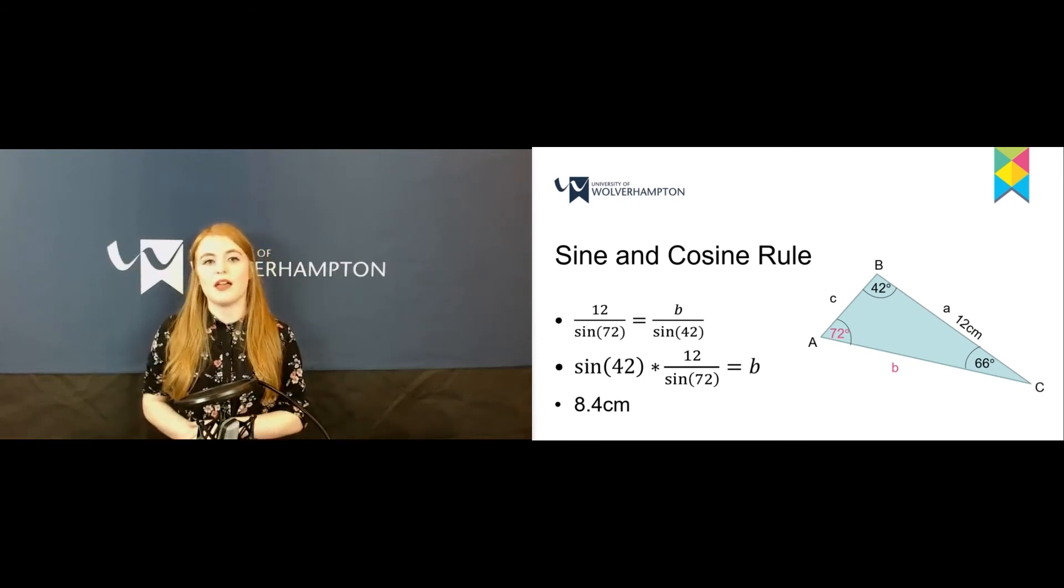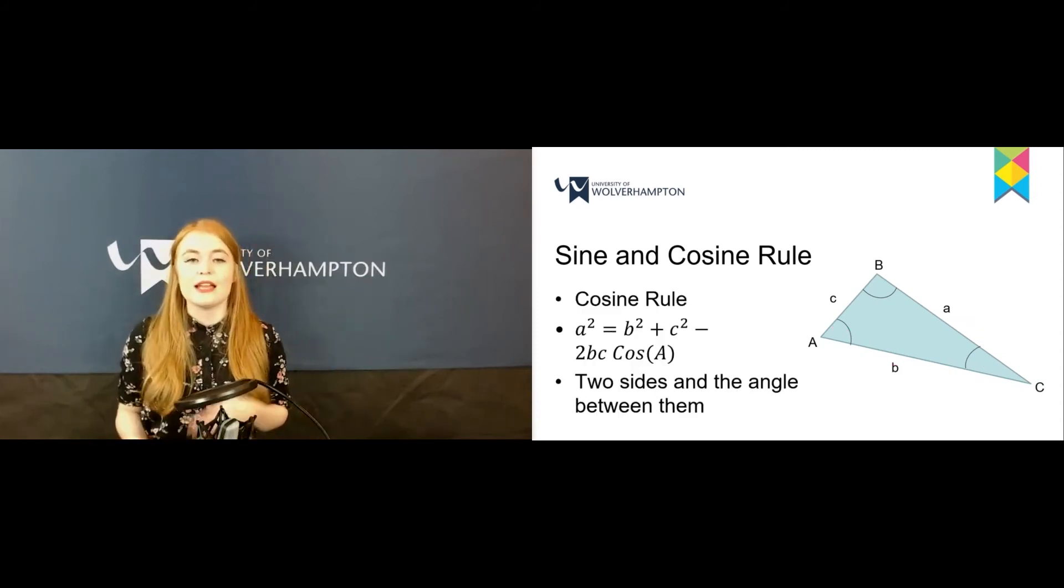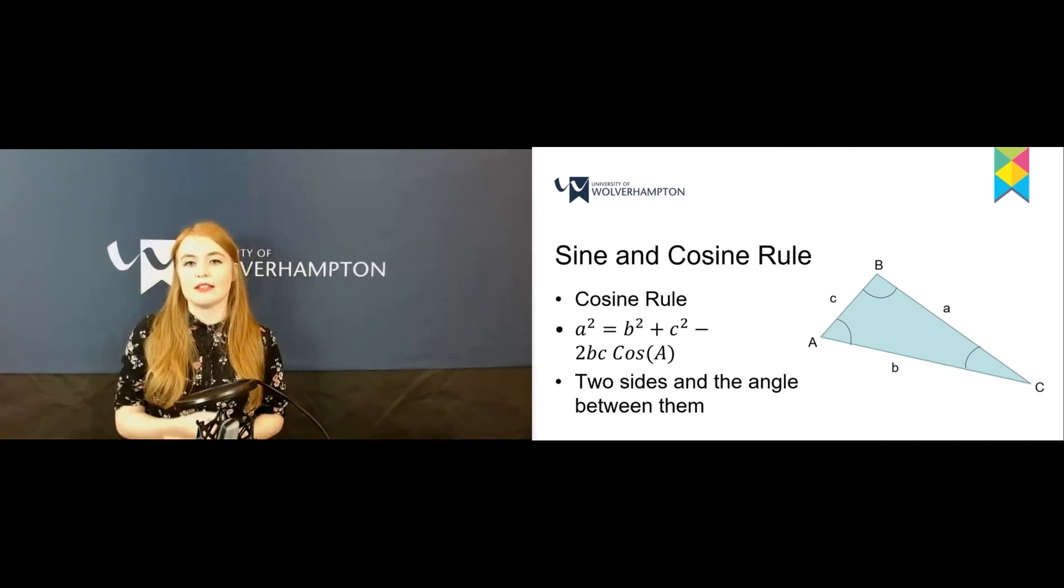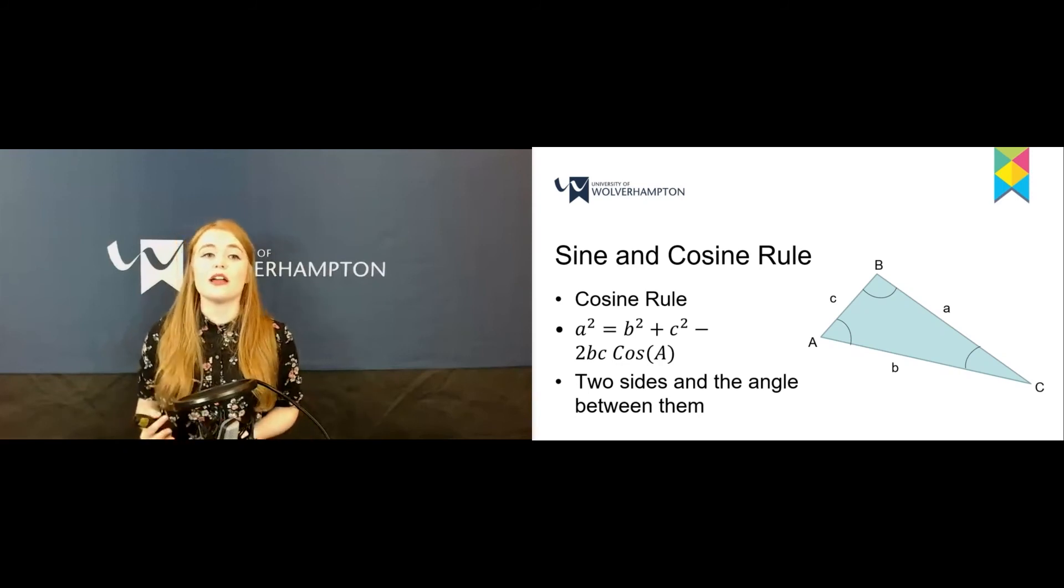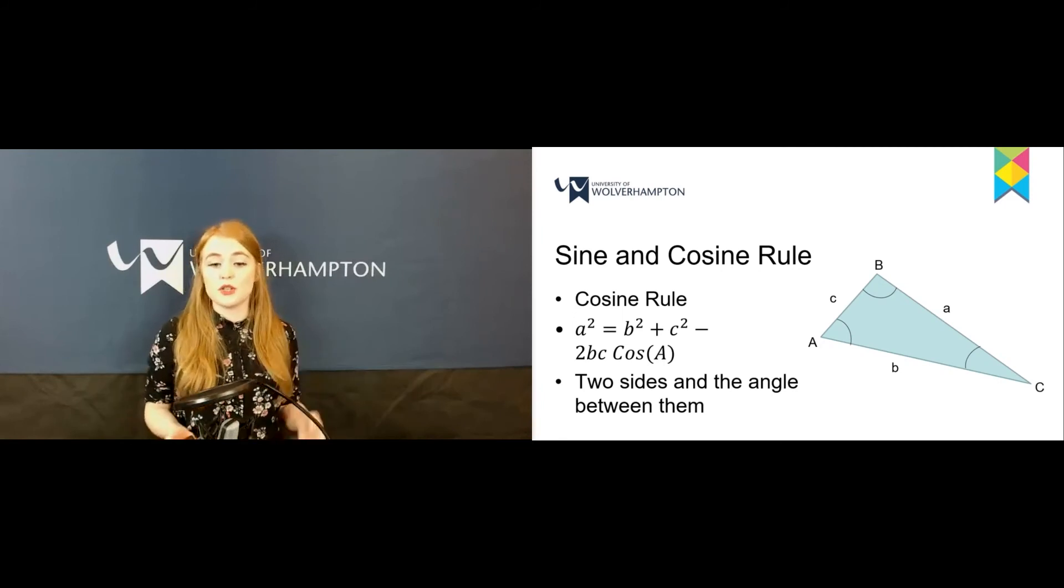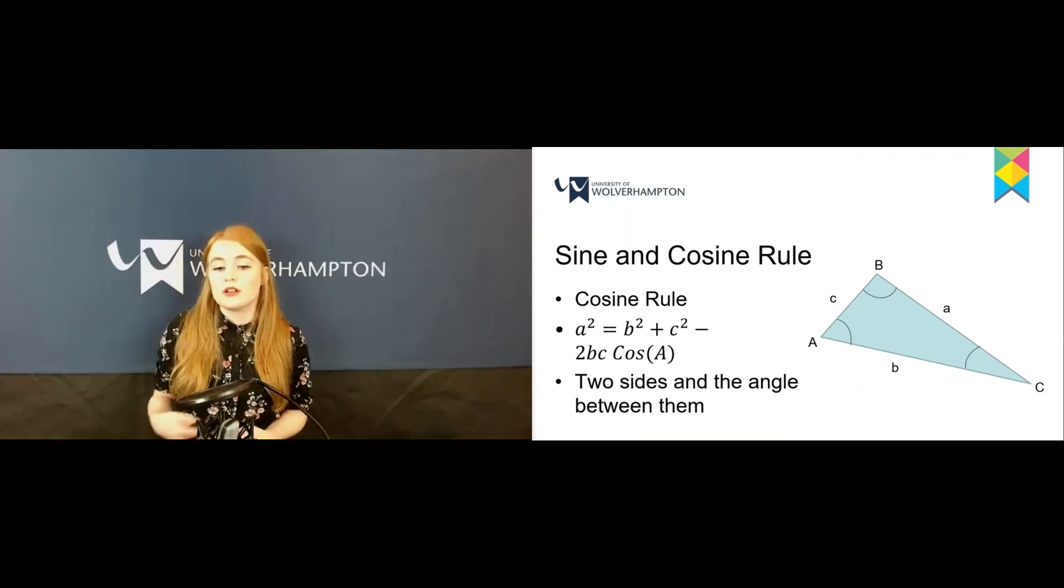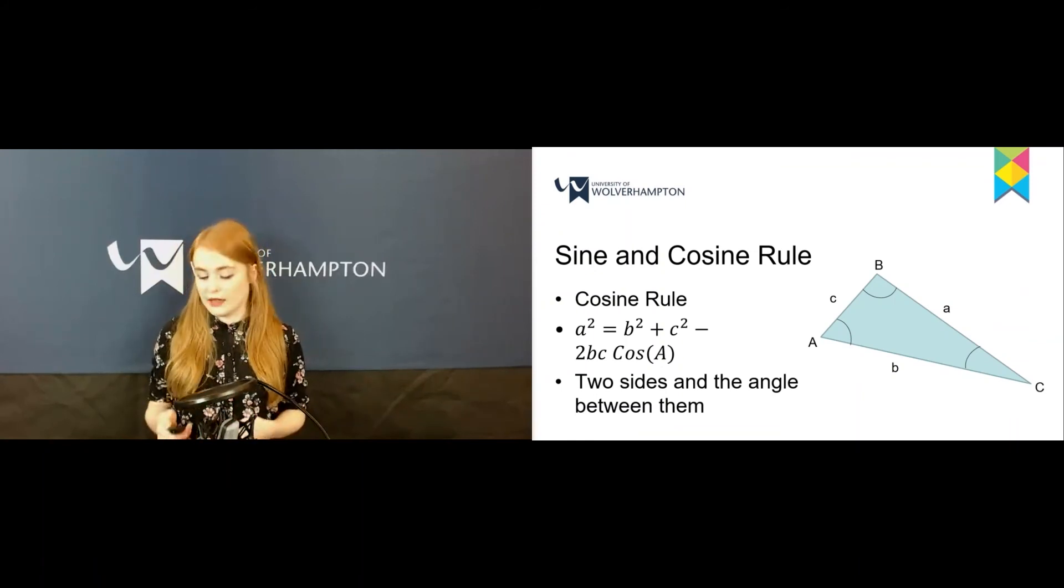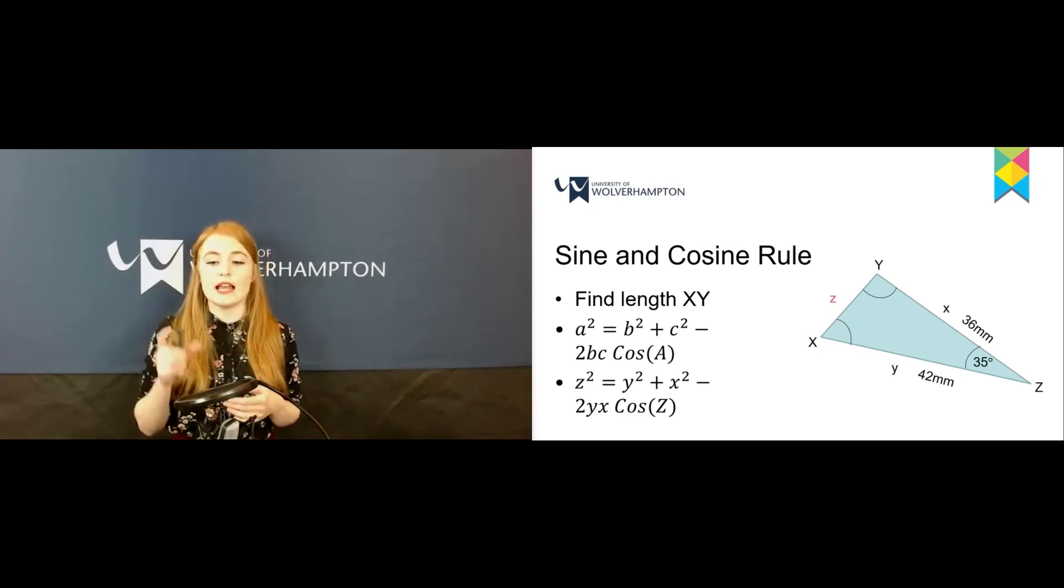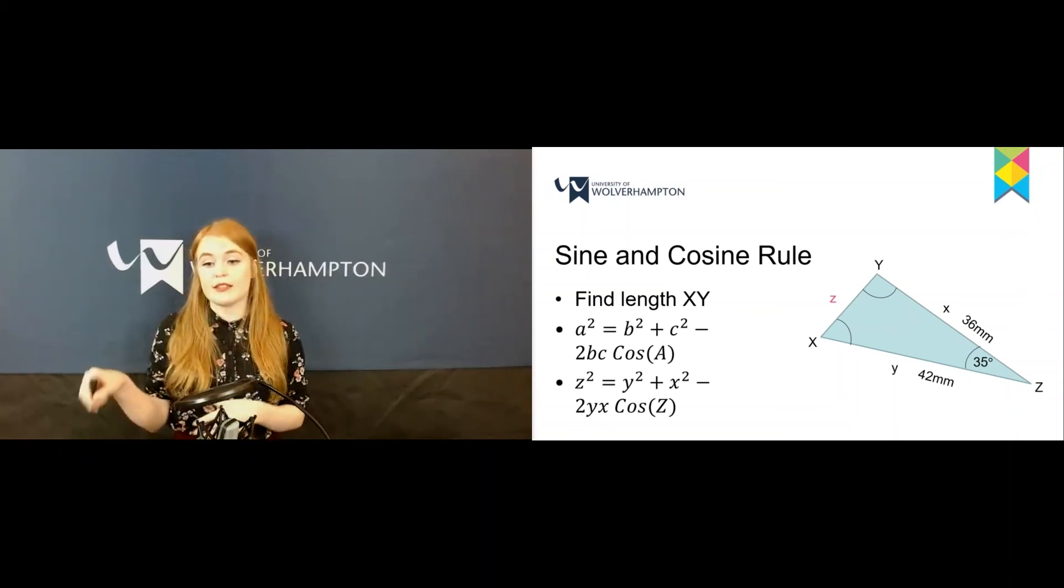The cosine rule: a² = b² + c² - 2bc·cos(A). The triangle is set up the same way as the sine triangle. The difference between the two rules, other than the formula, is when we use them. The cosine rule is when we have two sides and the angle between them.